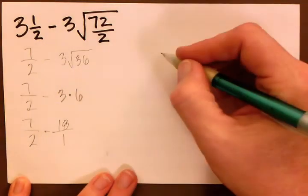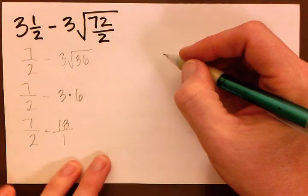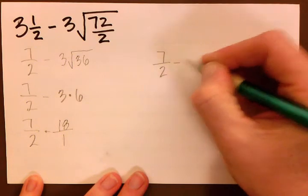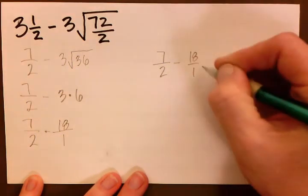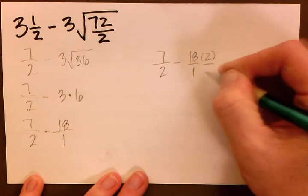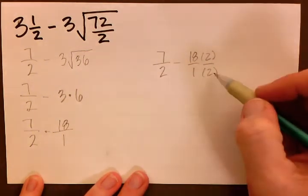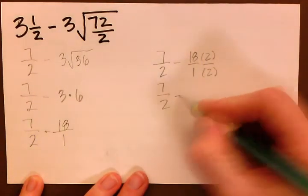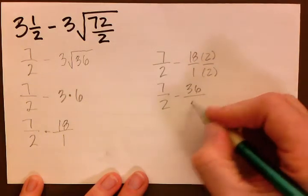I'm going to go back over here and continue working on this problem. What we have to do is get a common denominator. Our common denominator is going to be 2. So we have 7 halves minus 18 over 1. And we have to multiply the whole entire side, 18 over 1 by 2 over 2. So now we have 7 halves minus 18 times 2 is 36. And 2 times 1 is 2.